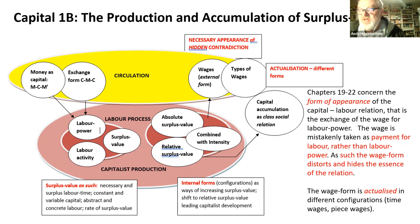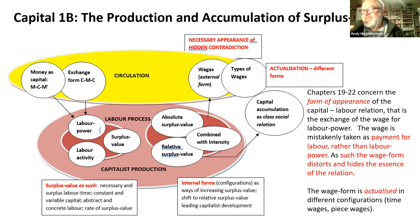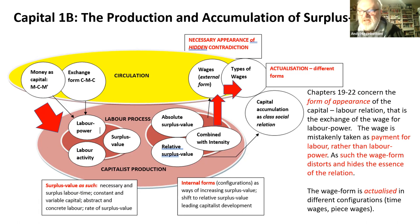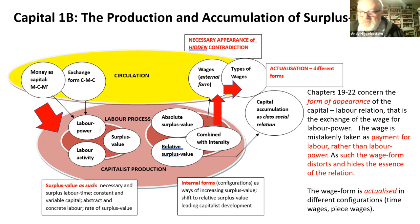Marx explains that the wage is mistakenly understood to be an exchange for labor. He sees the wage form as the necessary form of appearance of the exchange value of labor power, which may itself take different configurations — the actualization of the form of appearance into different types. This completes the circuit of how wage labor and capital really are and how they appear to be.